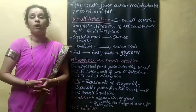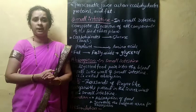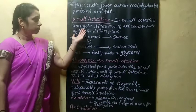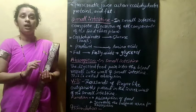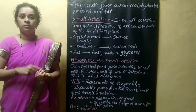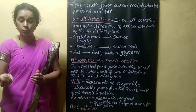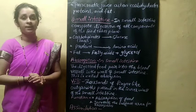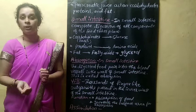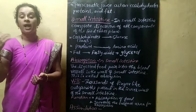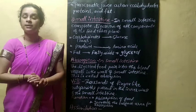Absorption mainly takes place in the small intestine, and sometimes a little amount of absorption also takes place in the large intestine. The absorbed and digested food is then transported to the organs, tissues, and cells of the body with the help of blood vessels. That process is called assimilation.